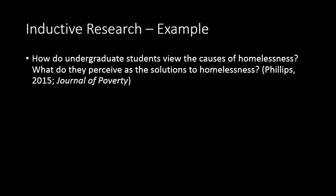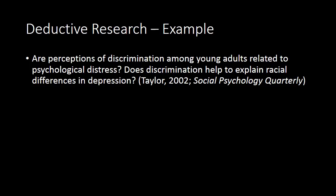An example of a research question that's more deductive in nature is: are perceptions of discrimination among young adults related to psychological distress? And does discrimination help to explain racial differences in depressive symptoms? This research question is deductive because the research questions and the hypotheses that can be formulated from them are drawing from an existing social theory — specifically, the stress process theory, which specifies how stress is related to health, how social characteristics affect exposure to stress, and how personal social resources moderate the relationship between stress and health. Based on the stress process theory, this researcher was able to form a hypothesis about one form of social stress — discrimination — and how it relates to psychological distress.